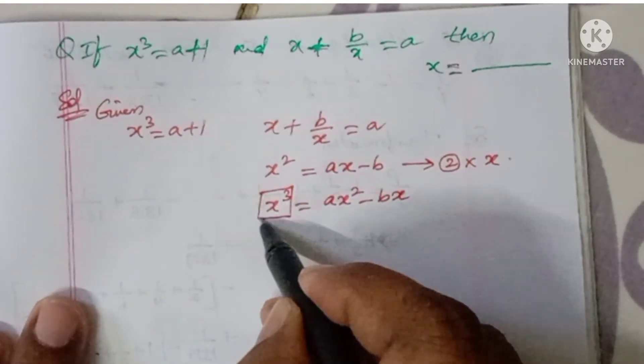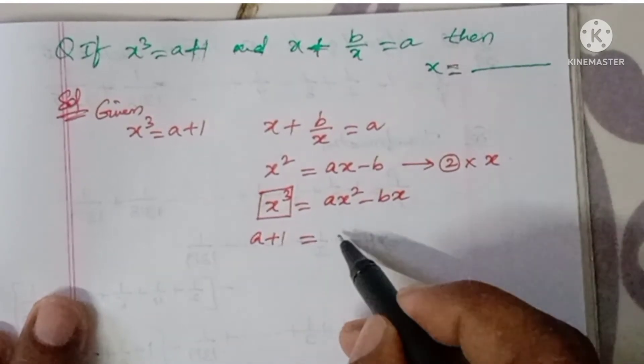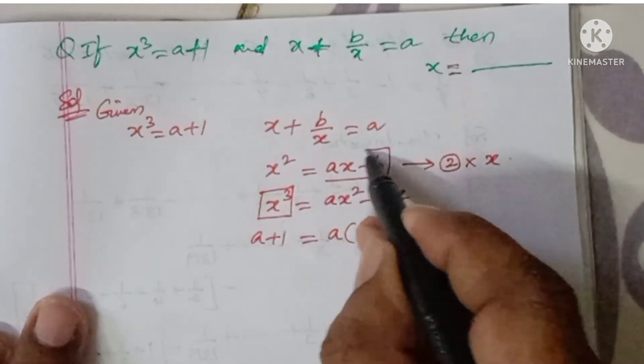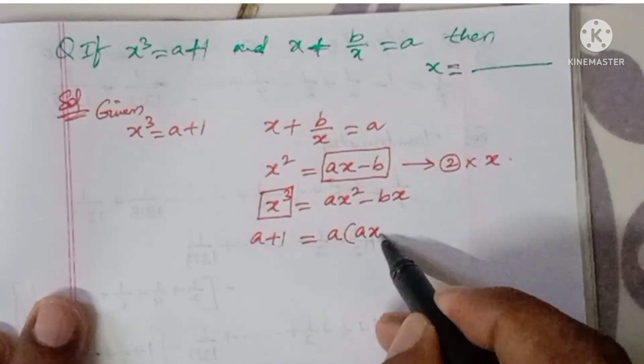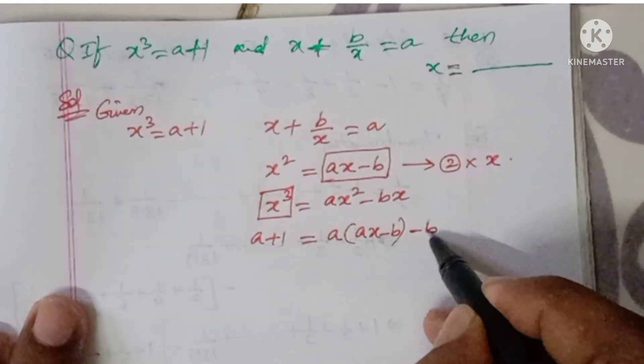x³ value is given as a+1. So a+1 is equal to a into x² value, which is ax - b, minus bx.